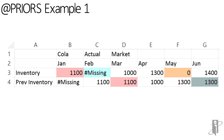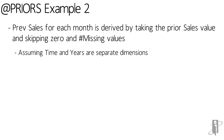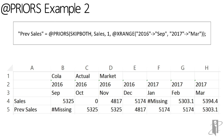We see a similar result in June, as the zero value in May was skipped using the Prior S function with the Skip Both option. For our second example, the previous sales for each month is derived by taking the sales value from the previous month, skipping both #MISSING and zero values. We imagine the time period and years dimensions are separate. The formula for previous sales is Prior S for the sales member retrieving the previous month in the X range of September 2016 to March 2017. The X range specified allows the months and years to be treated as one continuous list of members. As we look at a retrieve, we can see that the prior month's sales are brought into the previous sales member, with months containing #MISSING or zero skipped and the next available member's value in the X range list used.